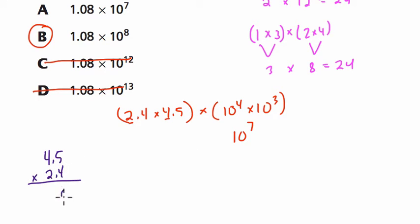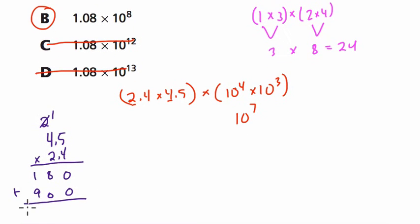4 times 5 is 20, so I carry the 2. 4 times 4 is 16, plus 2 is 18. Now, I'm multiplying 2 and 5, which is 10. I'm going to get this 1 up here. 2 times 4 is 8, plus 1 is 9. And here, if we add these 2 up, we get 10, 8, 0.